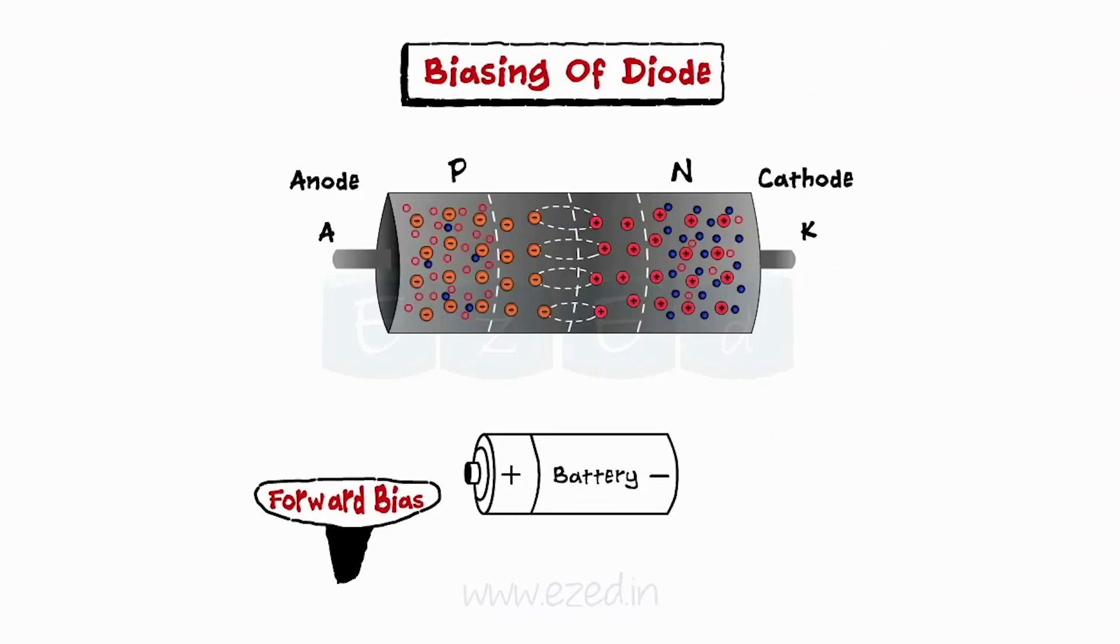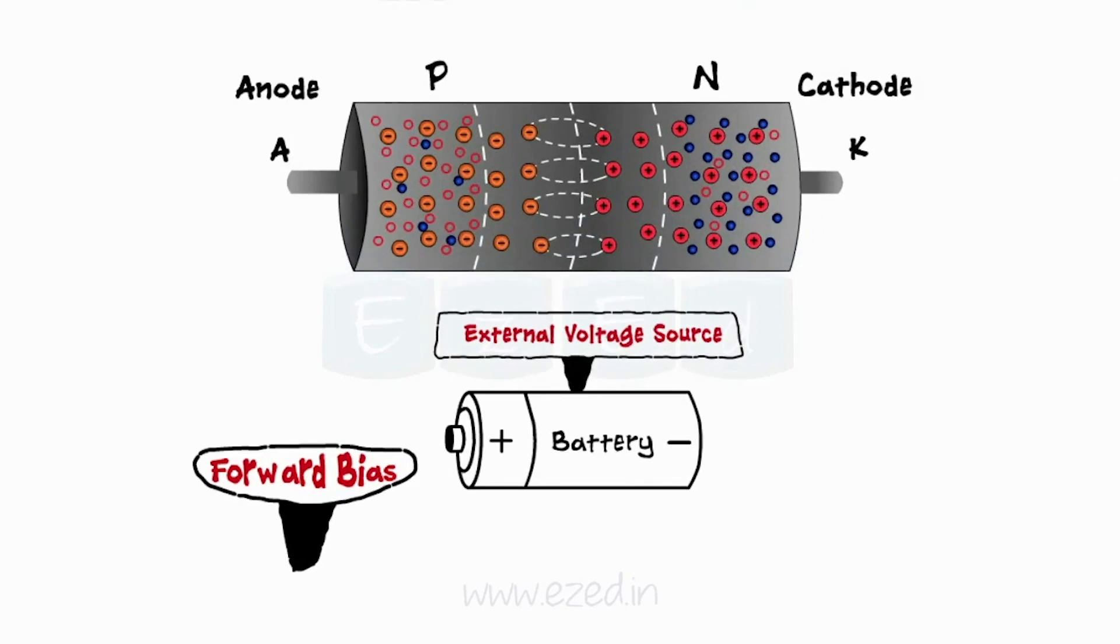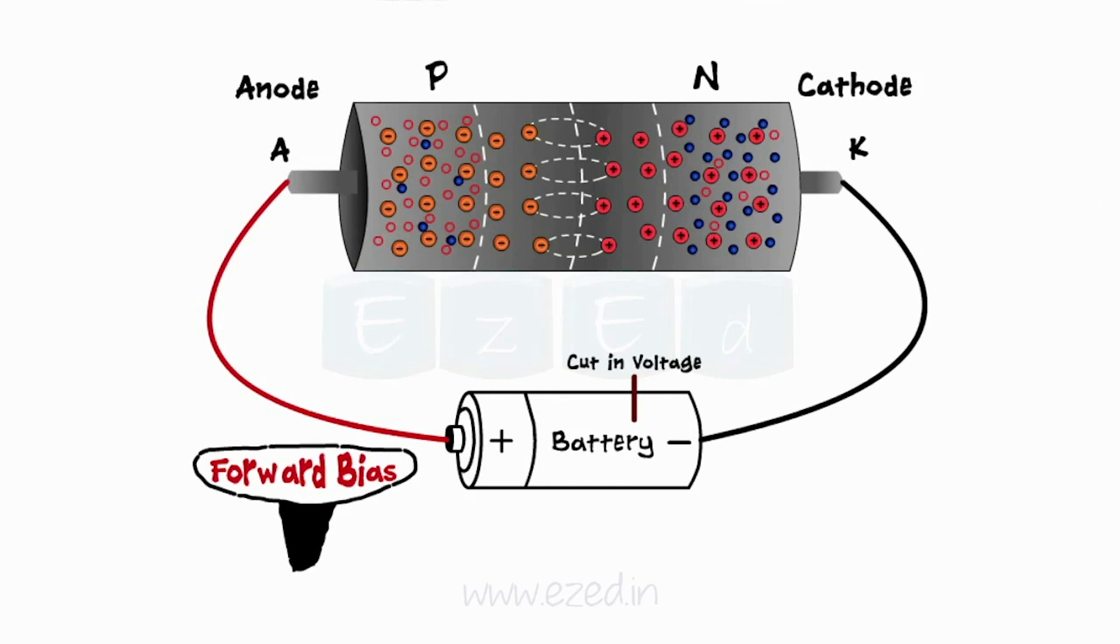We first look at the forward bias operation of the diode. We connect the positive terminal of a battery to the anode and the negative terminal to the cathode of a PN junction diode.